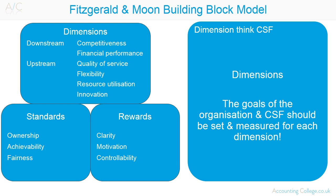The dimensions represent the goals of the organisation and critical success factors should be set and measured for each dimension. For example: competitiveness can be measured using relative market share; financial performance using turnover growth; quality of service using product reliability; flexibility using delivery times; resource utilisation using productivity; and innovation using new product numbers.